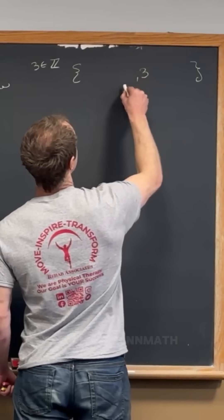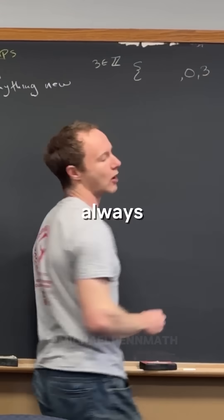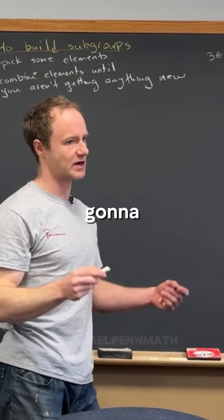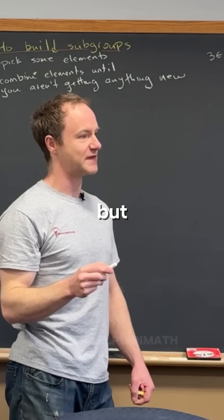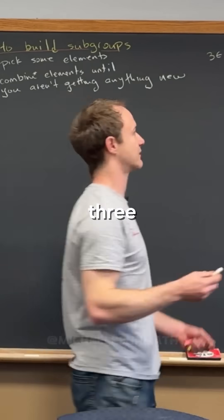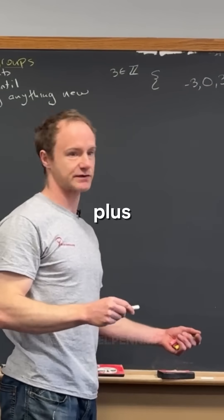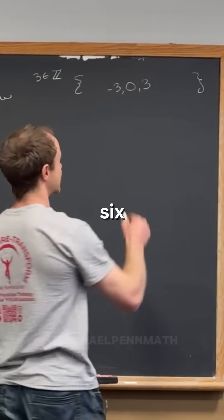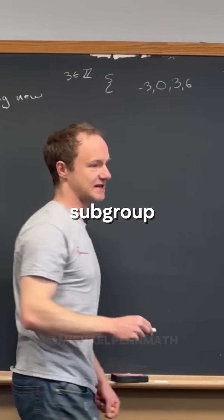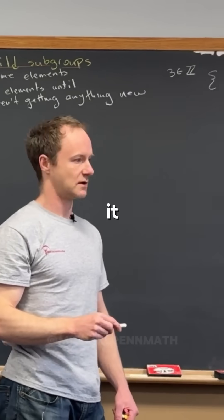So I've got three. Now I also have to always have the identity, so I'm going to put the identity in there. But then what's the inverse of three? Negative three, because our operation is addition. And then what's three plus three? Six. So since a subgroup has to be closed, we know it has to include six.